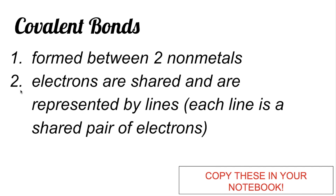Another thing that you need to remember about covalent bonds is that the electrons are shared, and these are represented by lines. Each line means one shared pair of electrons.